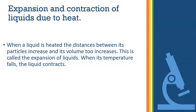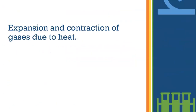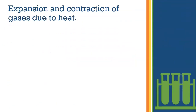When a liquid is heated, the distances between its particles increase and its volume too increases — this is called expansion of liquids. When its temperature falls, the liquid contracts. That was expansion and contraction of liquid.